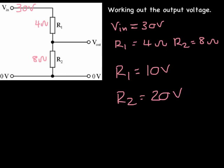And that's how a potential divider works. So in this particular circuit, the voltage coming out of the actual circuit, Vout, will be equal to 20 volts. And that would be linked to another circuit, and we'd be powering it in that way.